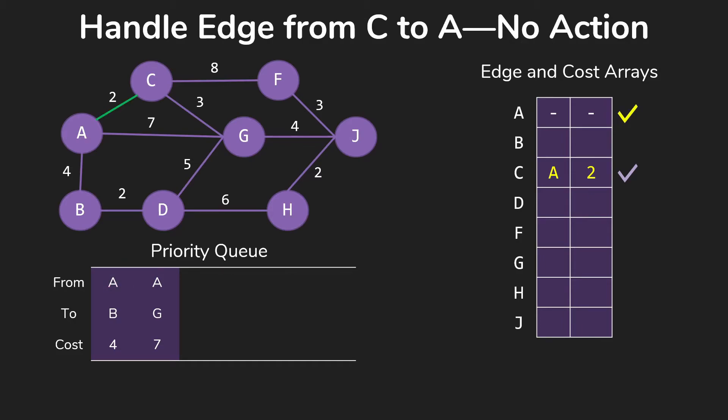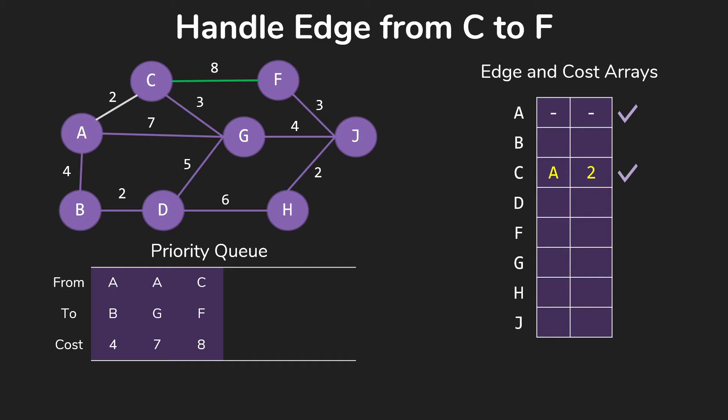Then we'll go through and we'll handle the edges out of C. So, of course, we don't do anything about the edge from C to A. We've already got A in our tree. When we handle the edge from C to F, now notice we're not putting in a path cost here. We're putting in the cost of that one edge because that's what matters for this problem. So we put in CF for 8 and CG for 3.